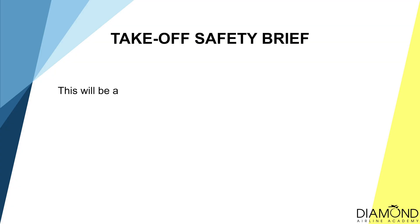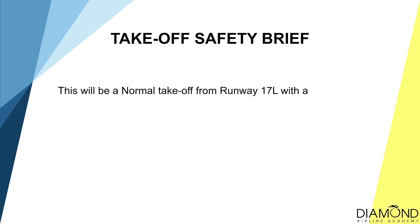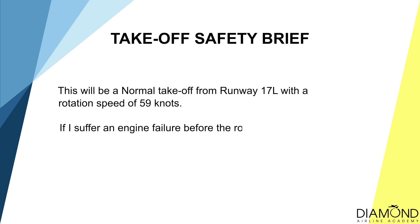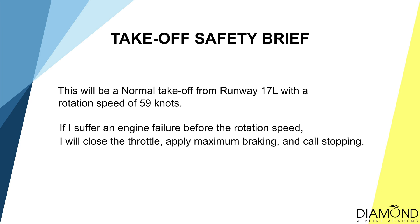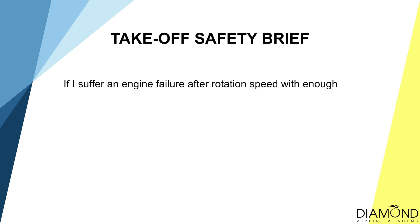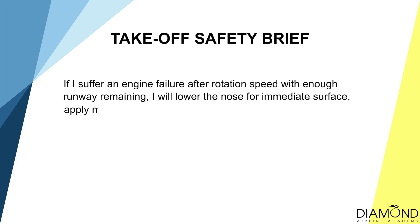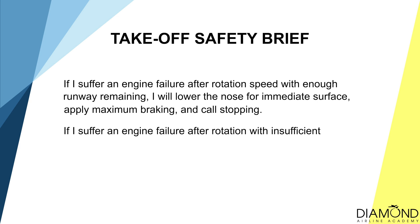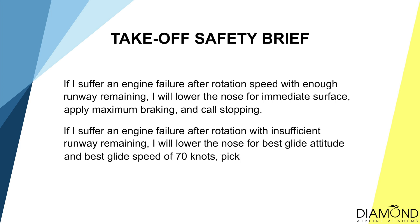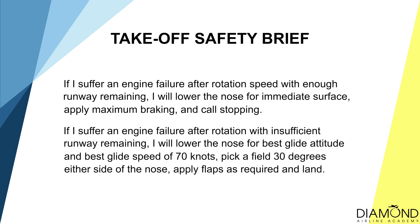Let's say today we are using runway 17L to take off. This will be a normal take-off from runway 17L with a rotation speed of 59 knots. If I suffer an engine failure before the rotation speed, I will close the throttle, apply maximum braking and call 'stopping'. If I suffer an engine failure after rotation speed with enough runway remaining, I will lower the nose for immediate surface, apply maximum braking and call 'stopping'.